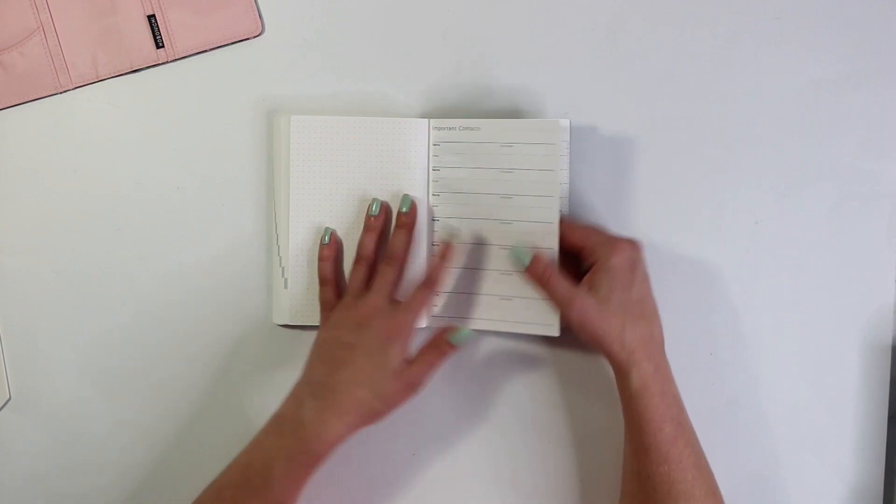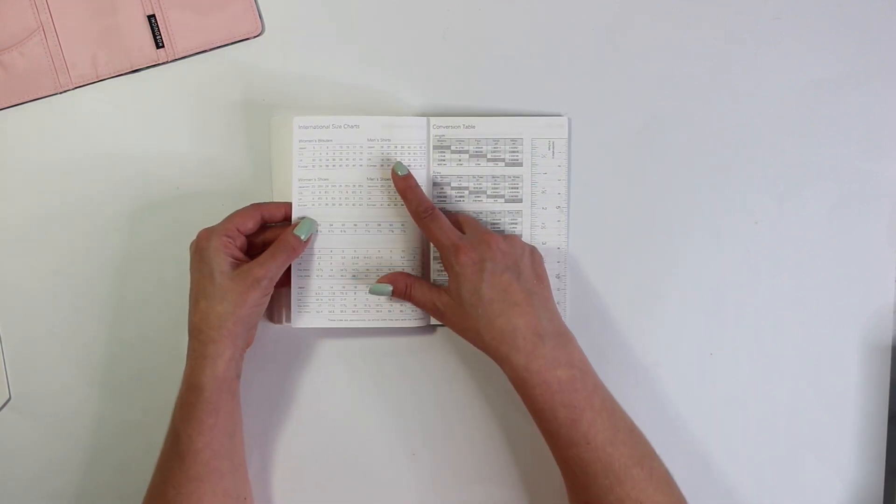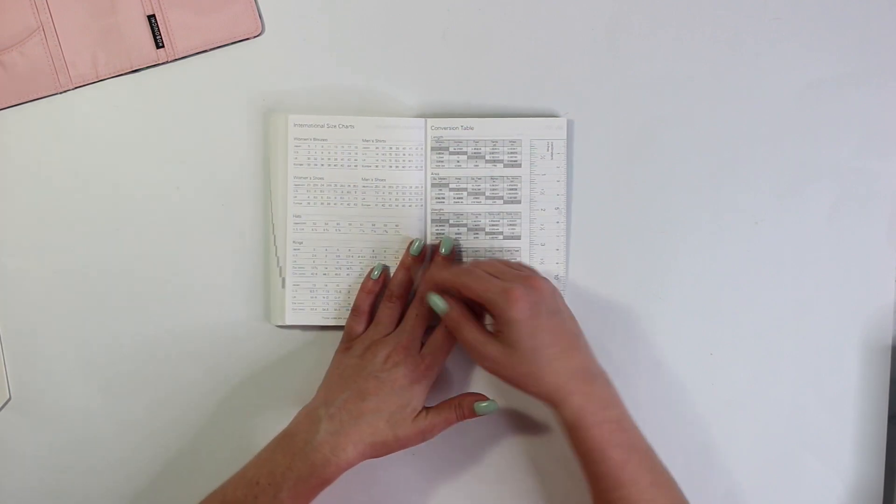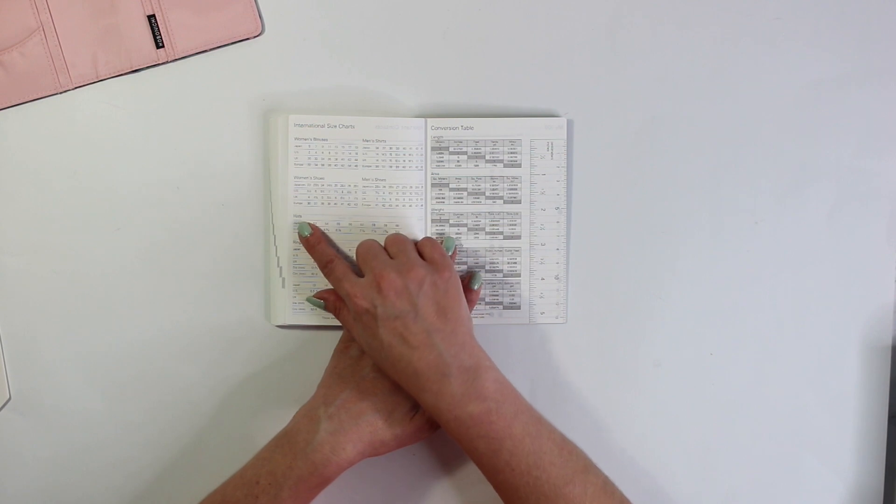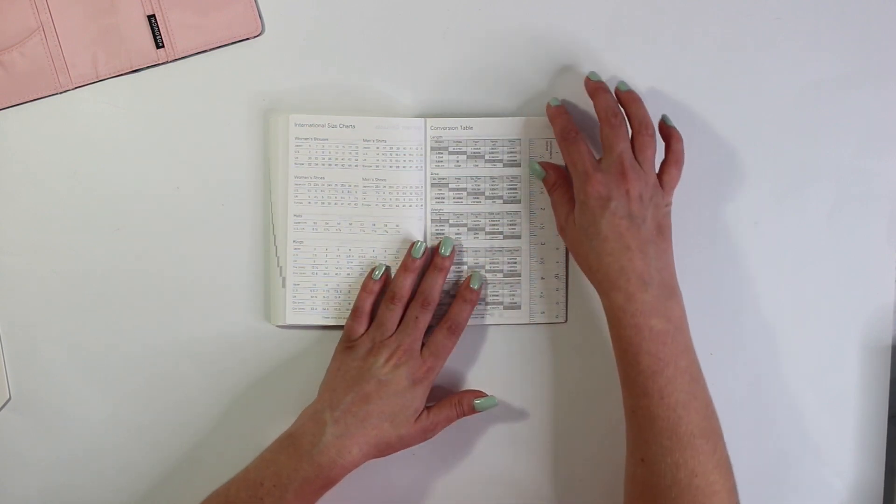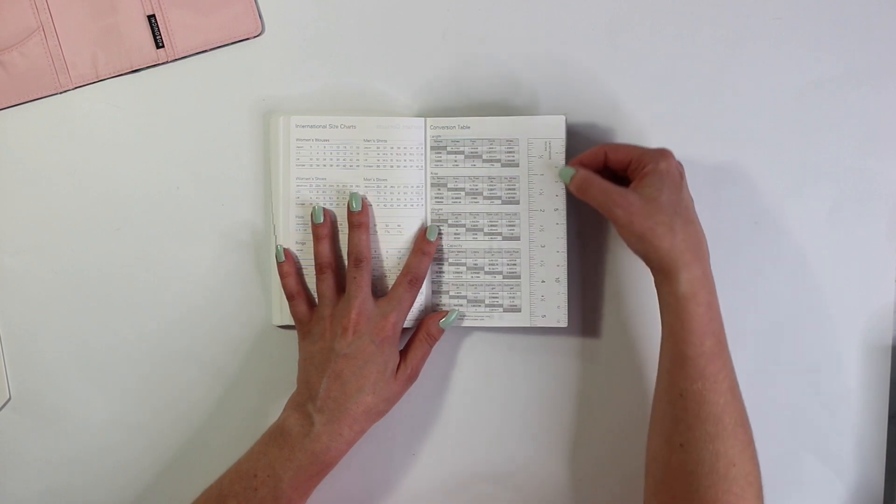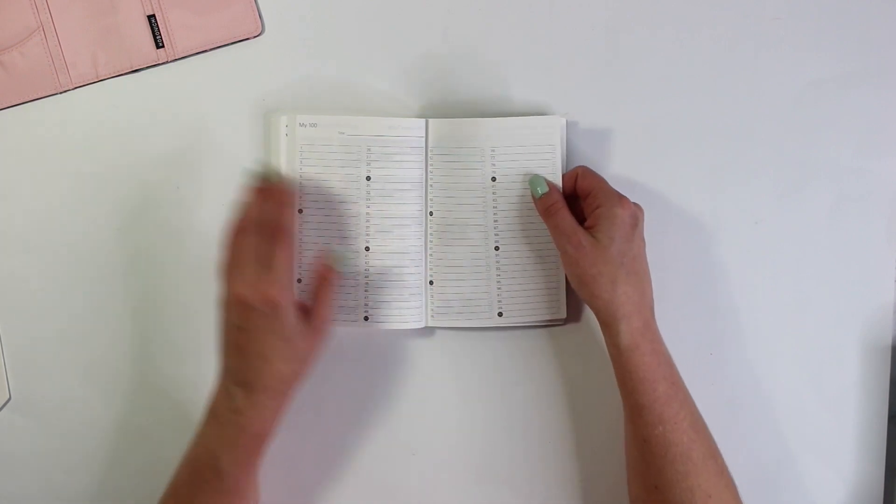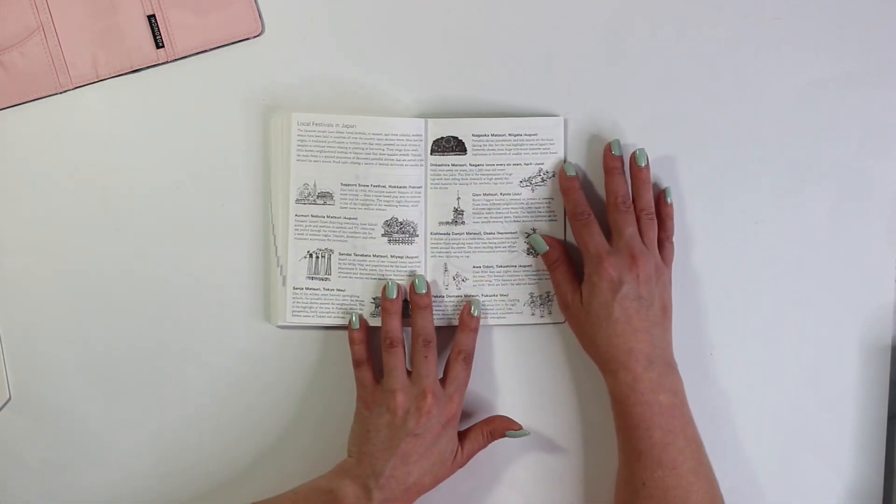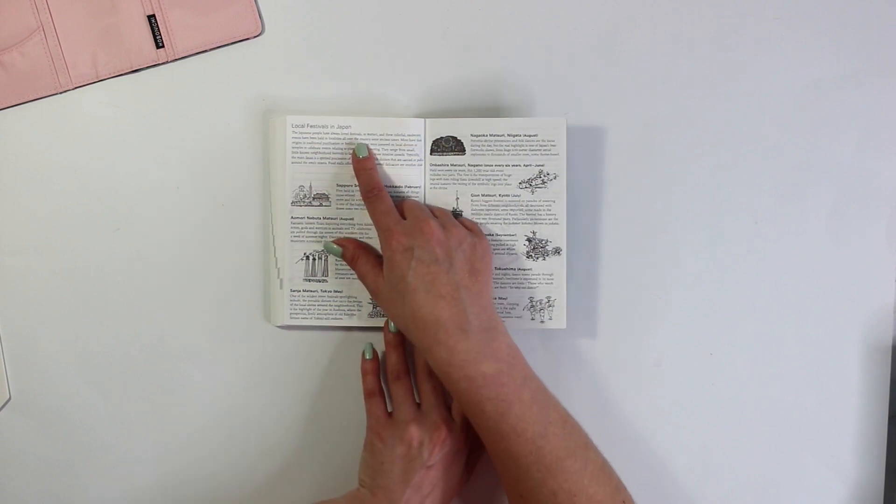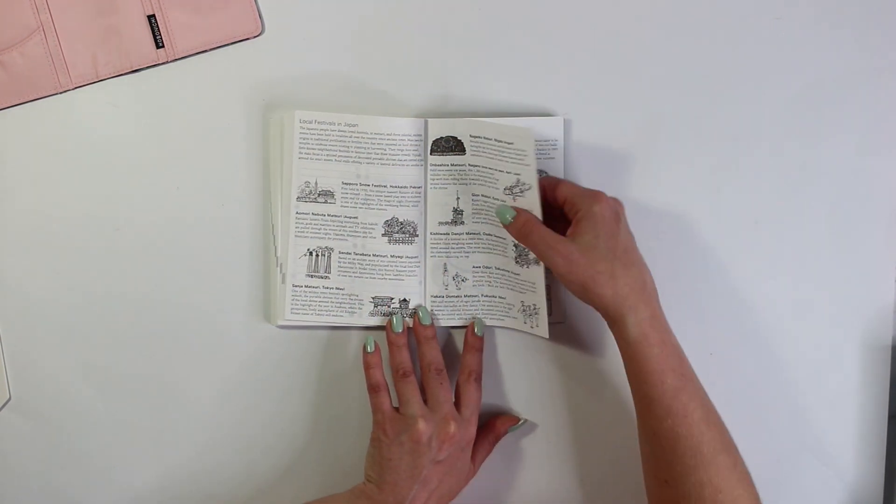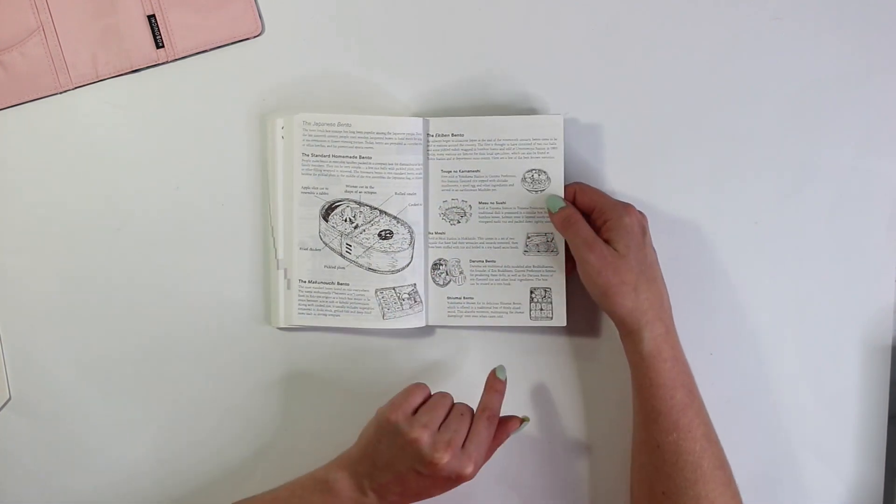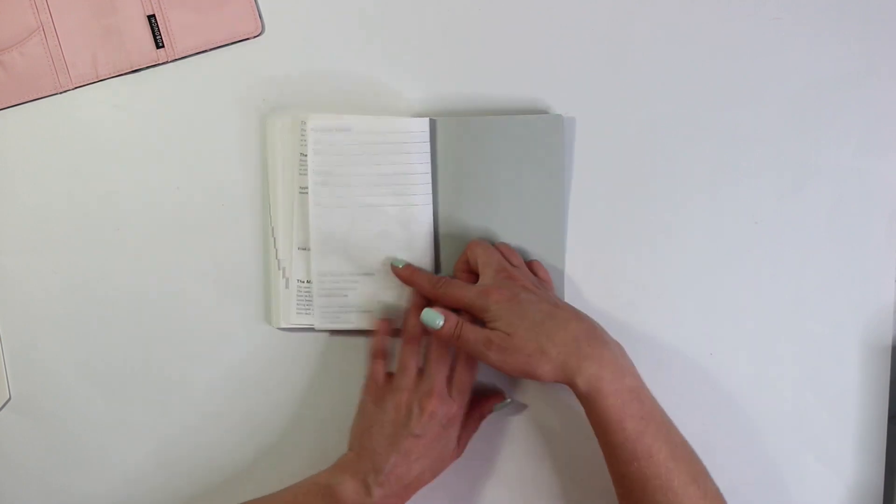And then it also has some important contacts here. International size charts even for hat rings. That's really fun. U.S., U.K., Europe, and Japan it looks like. There's a conversion table here. A little ruler here. My 100 which they actually have in the Hobonichi weeks as well. And then this is really nice. It says local festivals in Japan. All these fun things. Oh I cannot wait to read all of this. The Japanese bento. Oh yummy. I definitely want to have some of that now.